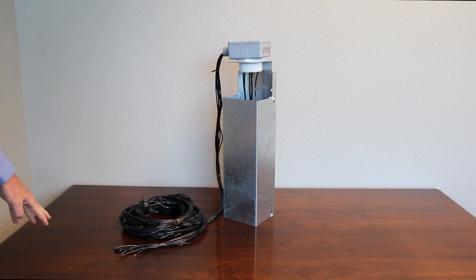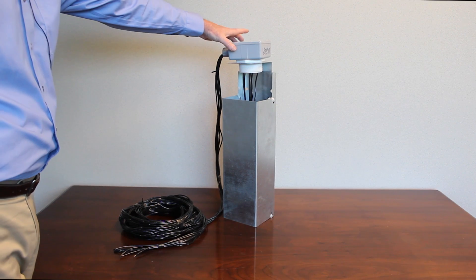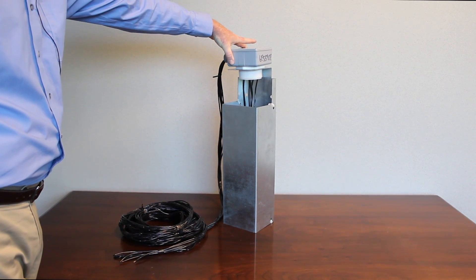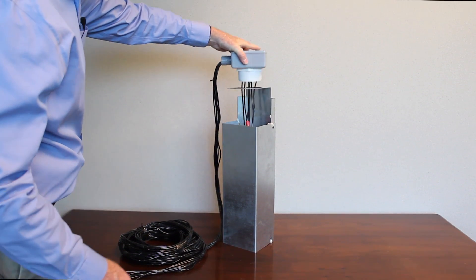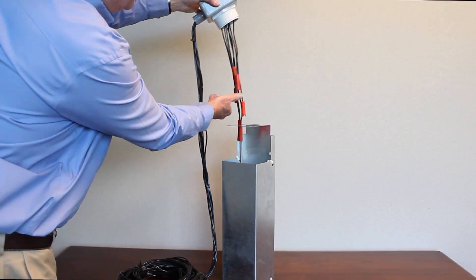Next we're going to talk about the probe set component along with the stilling chamber. As you'll see here, the probe set is mounted to the top of the stilling chamber and this would reside in the basin of the cooling tower. I'm going to go ahead and remove the probe set from the stilling chamber to show you this in detail.